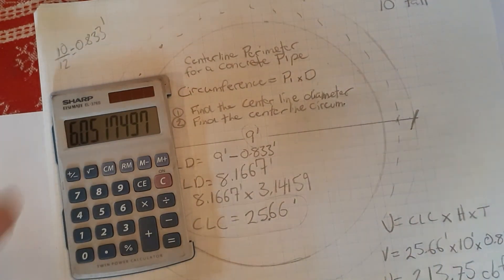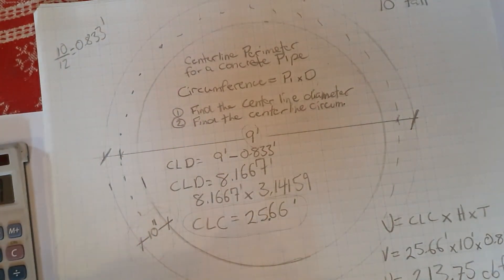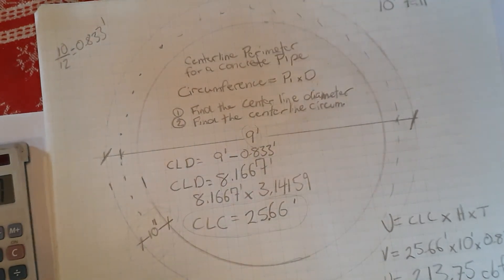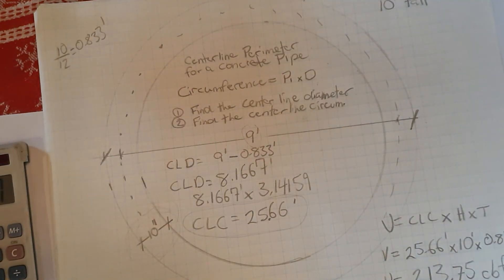So center line perimeter of a concrete pipe—fairly simple volume calculation and something to remember, again not so much for your career, but to get you through some of the ministry tests and some of the apprenticeship tests that are in your future. Stay tuned, the next video is going to talk to you about center line perimeter and how we can use that for figuring out the linear feet of formwork or forming material required.